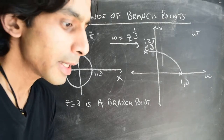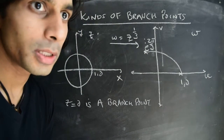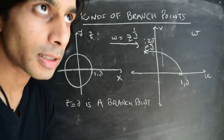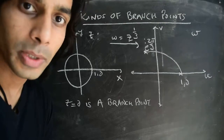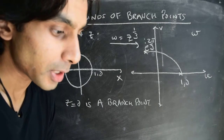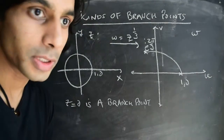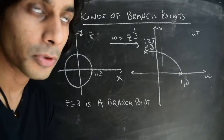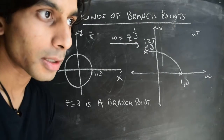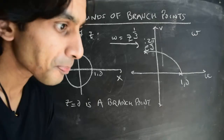Hi there and welcome back. In the previous videos we started talking about branch points, and in particular we talked about a rule: how to identify whether a particular region in the z-plane for a given mapping contains a branch point or not.